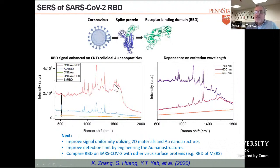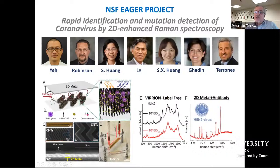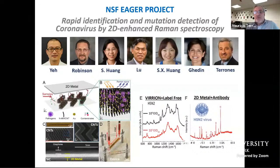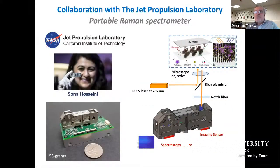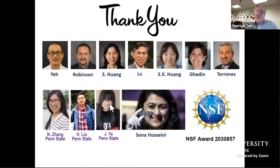We want to get even better signals using 2D metal substrates instead of gold nanoparticles, and we're getting sharper signals, which will give us even higher accuracy and better performance. We want to deploy this in the field, and for that we have a collaboration with JPA and Sona Hosseini, who can make handheld Raman spectrometers deployable in the field. We hope to finish this design and improve the signal-to-noise ratio over the following months. Thank you to the students, postdocs, and Sona Hosseini who are part of this award.